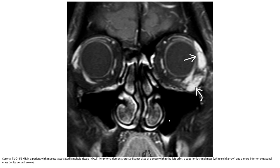This is the coronal T1C plus fat-saturated MRI in a patient with mucosal-associated lymphoid tissue lymphoma, also called MALT lymphoma. Looking at the left orbit, there is a sub-glandular mass and a more inferior extra-conal mass as seen in the image.